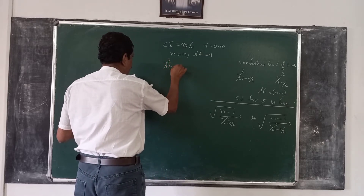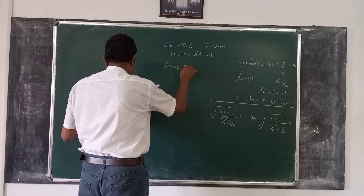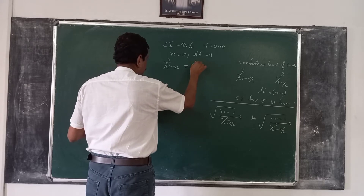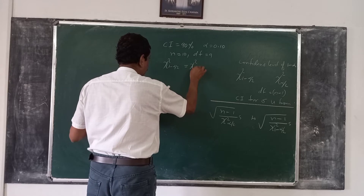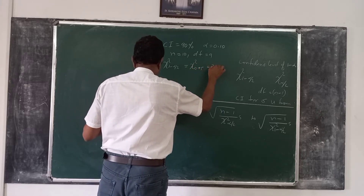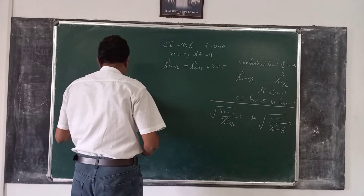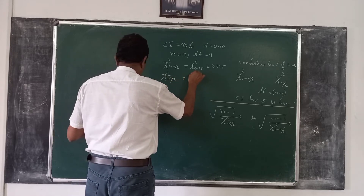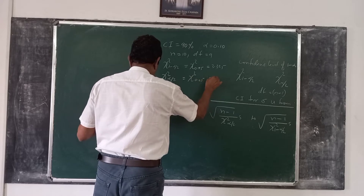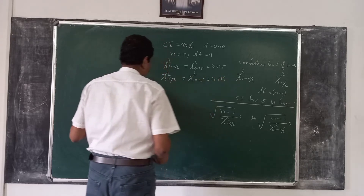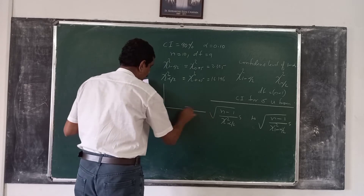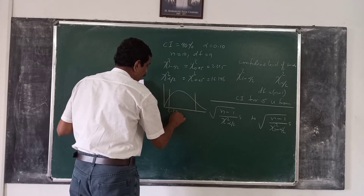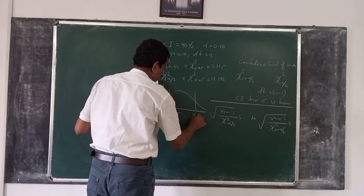Then chi-square (1 minus alpha/2) equals chi-square (0.95), and the value is 3.325. Then chi-square (alpha/2) equals chi-square (0.05) is equal to 16.196. These chi-square values are 3.325 and 16.196.